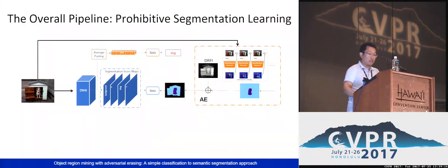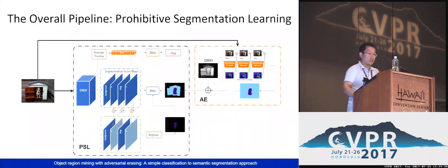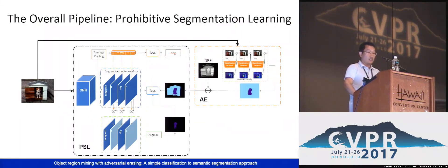PSL introduces an image-level classification branch. This branch provides classification confidence to modulate the corresponding category-specific maps and form them into an additional segmentation mask for training. This mask can be updated in an online manner. Those category-specific confidence maps with low classification confidences are prohibited from contributing to the produced segmentation mask.